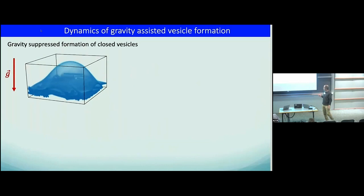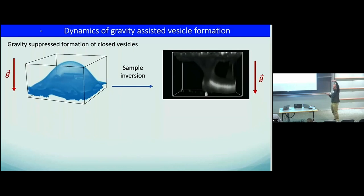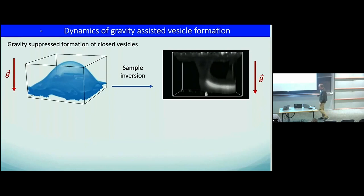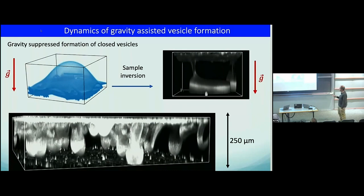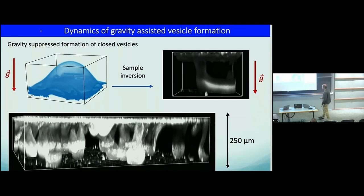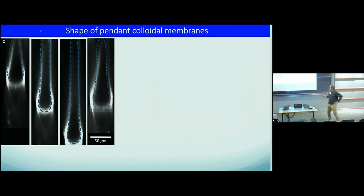How do we assemble these vesicles? If you let a nanoparticle sheet assemble onto a surface, it starts gently curving but will rarely close by itself against gravity. What we do is experimentally flip the sample 180 degrees, so gravity is now helping. You can see the sheet starts falling down and forming a vesicle-like structure. Zoomed out, you can see all of these liquid sheets sedimenting down and forming closed vesicles.